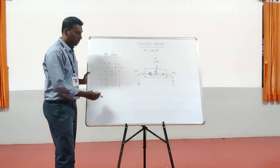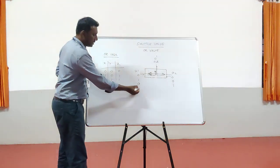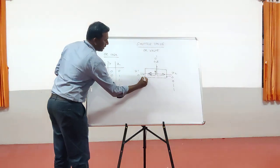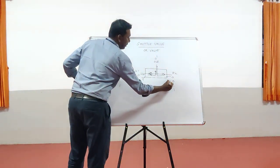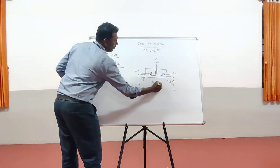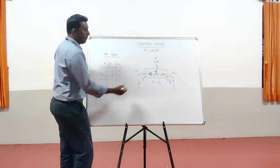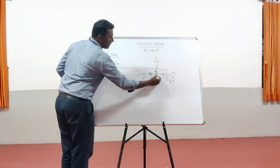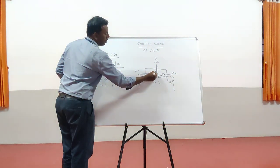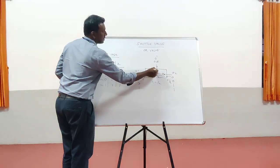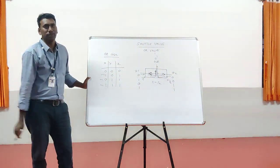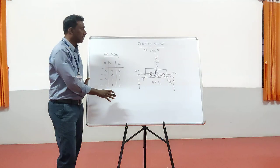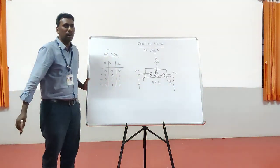The fourth combination is when both inputs are activated. If pressure P1 at input one equals pressure P2 at input two, both pressures are equal and the float ball floats in the center. Fluid enters from both directions, flows over the float ball, and passes through to produce the output. This is the basic mechanism carried out in the shuttle valve, and this mechanism is based on simple OR logic.